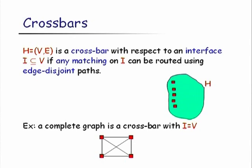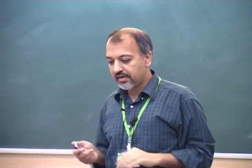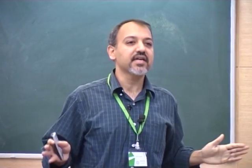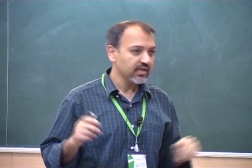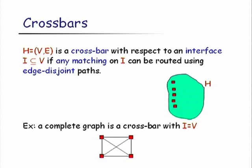A crossbar is a graph H with a special subset of vertices I called the interface such that: given any matching on the interface I, you can route it on edge-disjoint paths integrally within the crossbar. A complete graph is an example of a crossbar — any matching can be routed with one-hop paths.